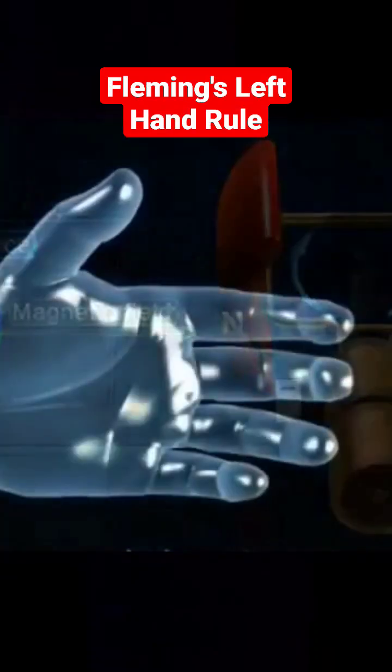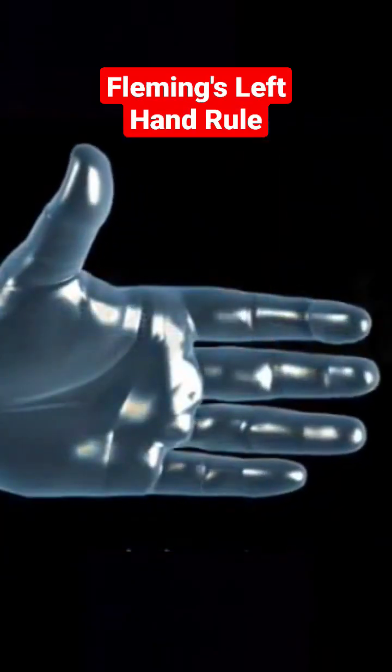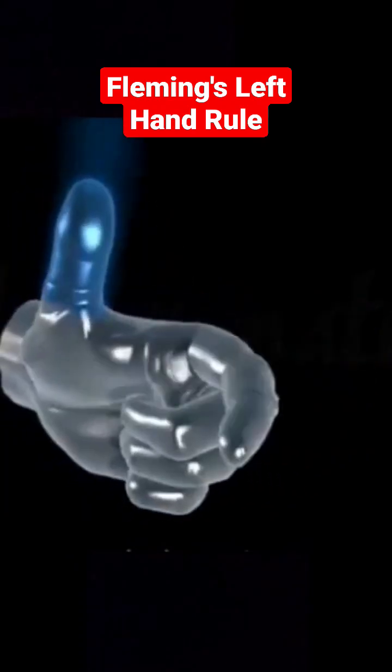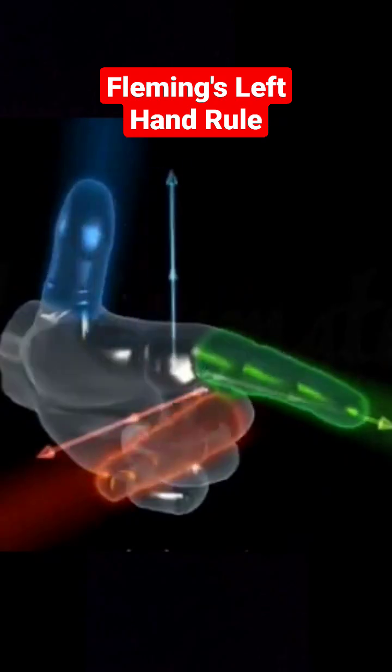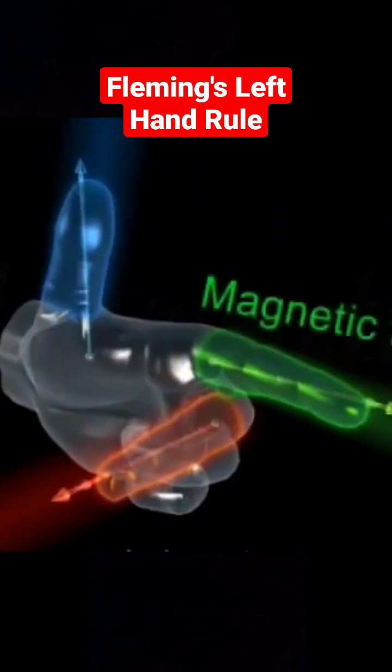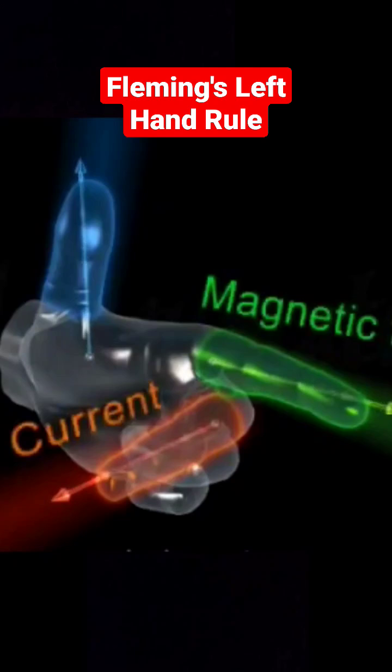Fleming's Left Hand Rule. According to this rule, if you arrange your left hand in such a way that your thumb, first finger, and second finger all point at right angles to one another, and if your first finger is pointing in the direction of the magnetic field, second finger is pointing towards the direction of current, then the thumb will give you the direction of the force.